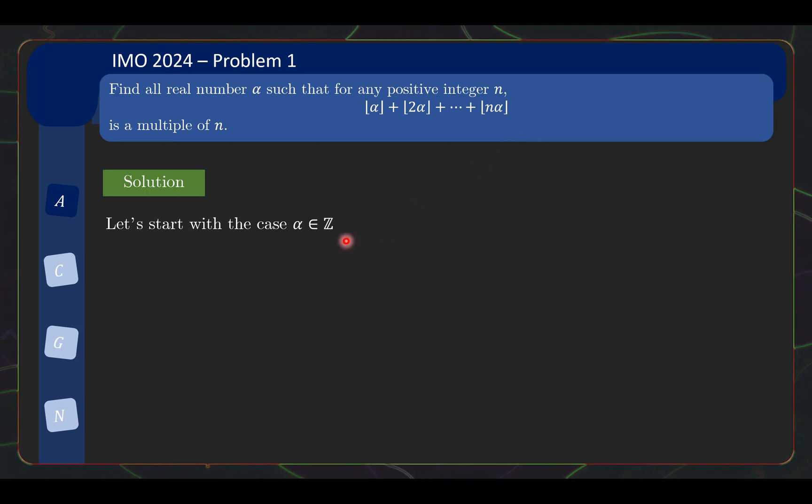If we do that, then we realize that all the terms here are integers and there's no need to deal with the floor functions. So the sum is directly evaluating out to n times (n plus 1) over 2 times alpha. So from here, we can ask ourselves when is this a multiple of n? Well, quite naturally you can see that if alpha is even, then alpha over 2 will be an integer and this whole expression will be a multiple of n. So indeed we have a valid solution here.